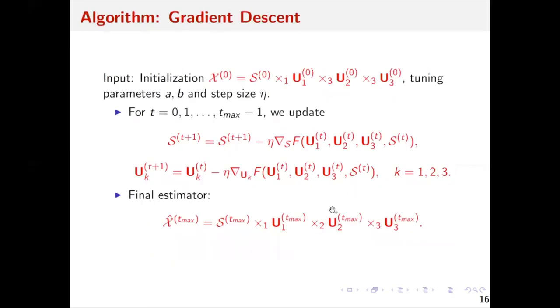How to solve this problem? We can apply gradient descent directly on this formulation. Specifically, given an initialization, we select good tuning parameters a and b and step size eta, then run gradient descent simultaneously on U1, U2, U3, and S. After sufficient iterations or until convergence, we have the final estimator.